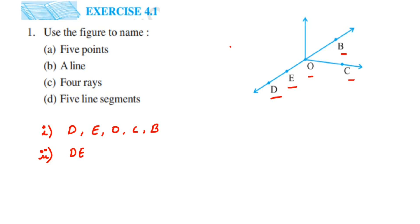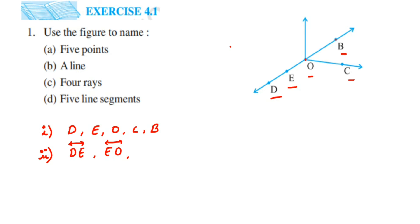The question hasn't specified how many lines to write, so I am going to use four different lines and write 'etc.' because we can write many. Remember to put the line symbol on top of DE — it represents that we are talking about a line. Next we have E and O, which are both on the same line, so we write EO with the symbol on top. Then O and B are on the same line, so we write OB.